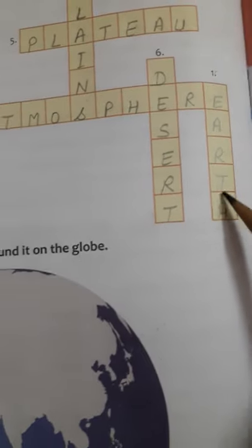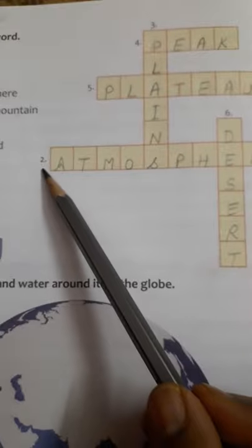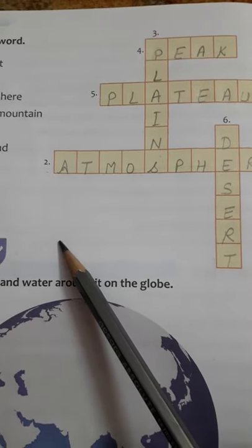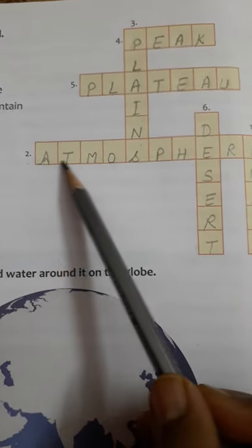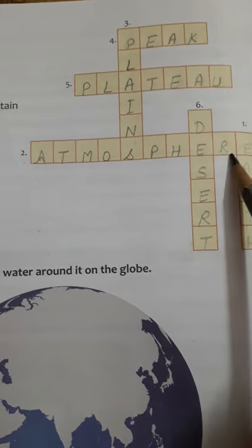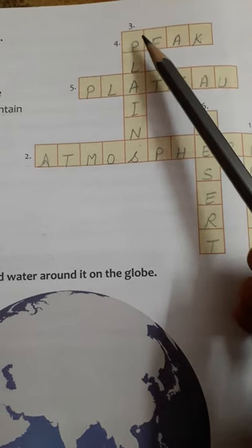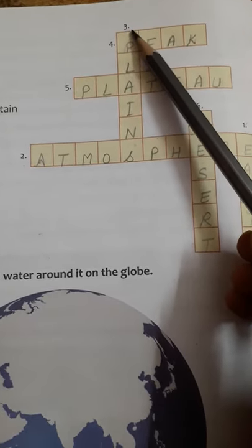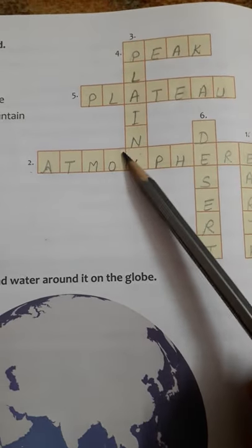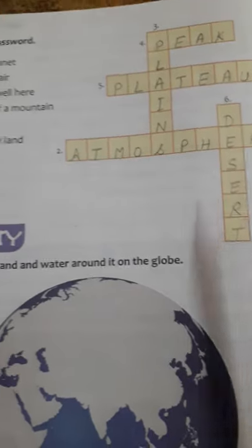And number 2, where is number 2? This is number 2. For number 2, there's no downward space, so we will write it horizontal. Next, 3, here is 3, so we will write the answer downwards. Fourth, horizontal. So let's start doing this.